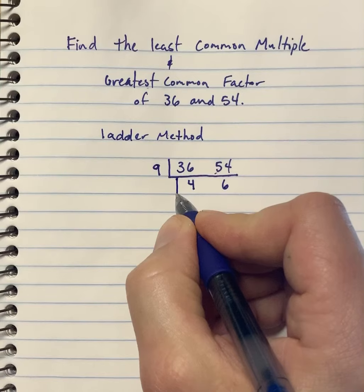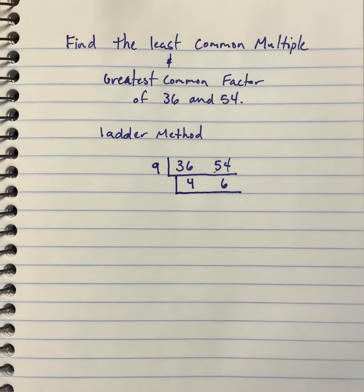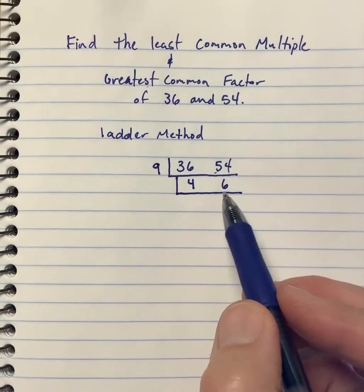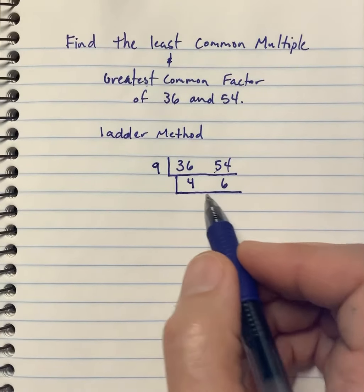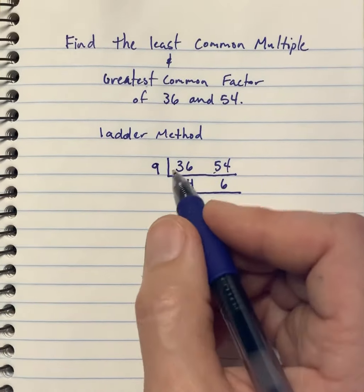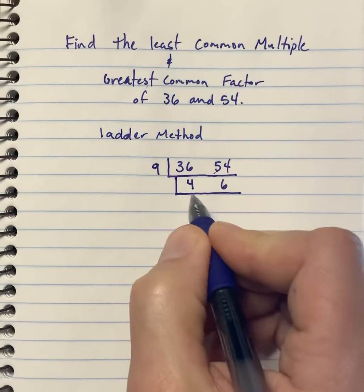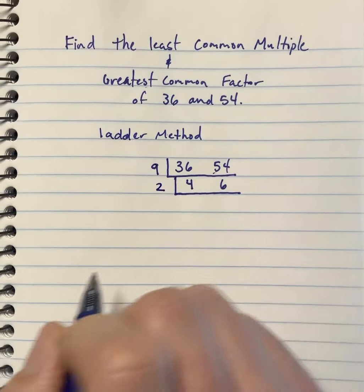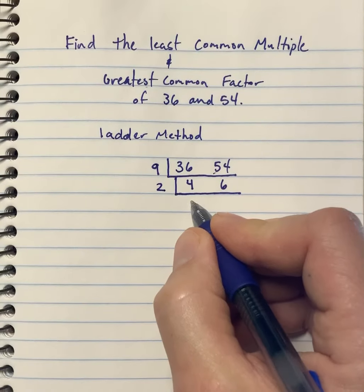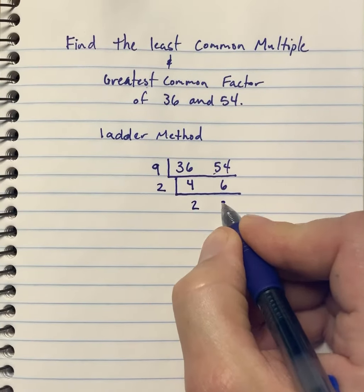Now we're going to put another rung, or another step, on this ladder and do the same thing all over again. We have the numbers 4 and 6 this time. 4 and 6 are both even numbers, which makes them divisible by 2. So I'm going to put this 2 on the outside. 4 divided by 2 is 2, and 6 divided by 2 is 3.